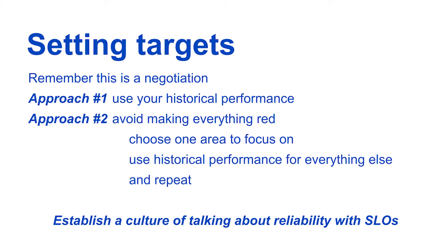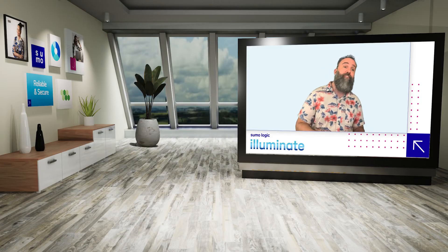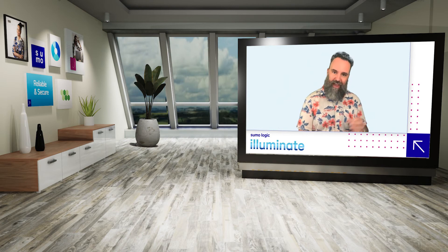With the basics of setting SLOs, let me quickly go over some common problems. One big one is averages — taking the mean of some metric. The problem is averages aren't useful if you don't know the distribution, if the distribution isn't normal, or if it changes. Instead of averages, use percentiles. You care most about the worst experiences users are having, and percentiles capture that. The industry standard is the 95th percentile — 95% of users have latency or error rate better than some target. Also be careful you're not accidentally averaging: one monitoring vendor would calculate the 95th percentile on each monitoring agent and then average all those percentiles across servers — which isn't the data you want. You want your data to be as rich as possible at the point where the SLO is calculated.